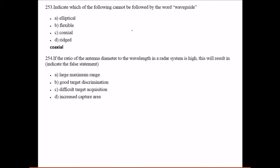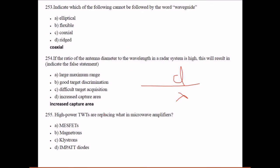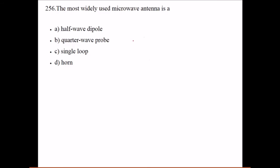If the ratio of the antenna diameter to the wavelength in a radar system is high, this will result in increased capture area. High power TWTs are replacing klystron in microwave amplifiers. The most widely used microwave antenna is a horn.